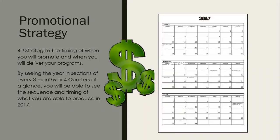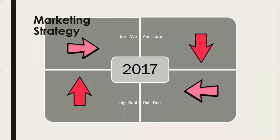I also want to do a promotional strategy. I like to look at it in four sections — three months at a time. This is the first three months of the year and I map out everything I'm going to do to get people to sign up for my programs, how I'll get more exposure, speaking engagements, networking events, or work with a joint venture partner. All of that goes on this calendar.